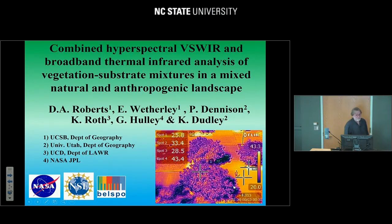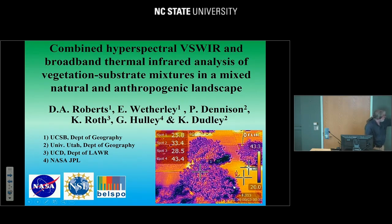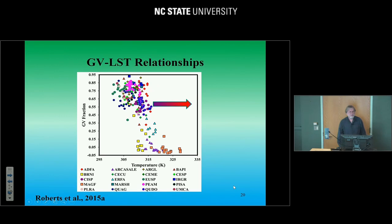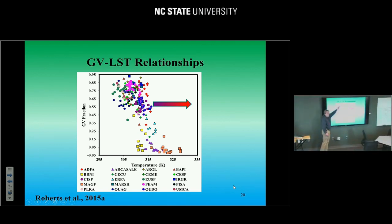Our next story is in the thermal domain. Having data in both the VSWIR and the thermal, I was very interested in: if we have really good information on fractional cover from the VSWIR, can we use that to tell us more about sub-pixel temperatures that occur in canopies and other surfaces? This work is by myself, Aaron Weatherly, Phil Dennison, Keeley Roth, Glyn Holley from JPL, and Kenneth Dudley. What inspired this was original work I did looking at the green vegetation versus land surface temperature relationship — as one might expect, it's an inverse relationship: the more fractional cover of vegetation, the cooler the surface.